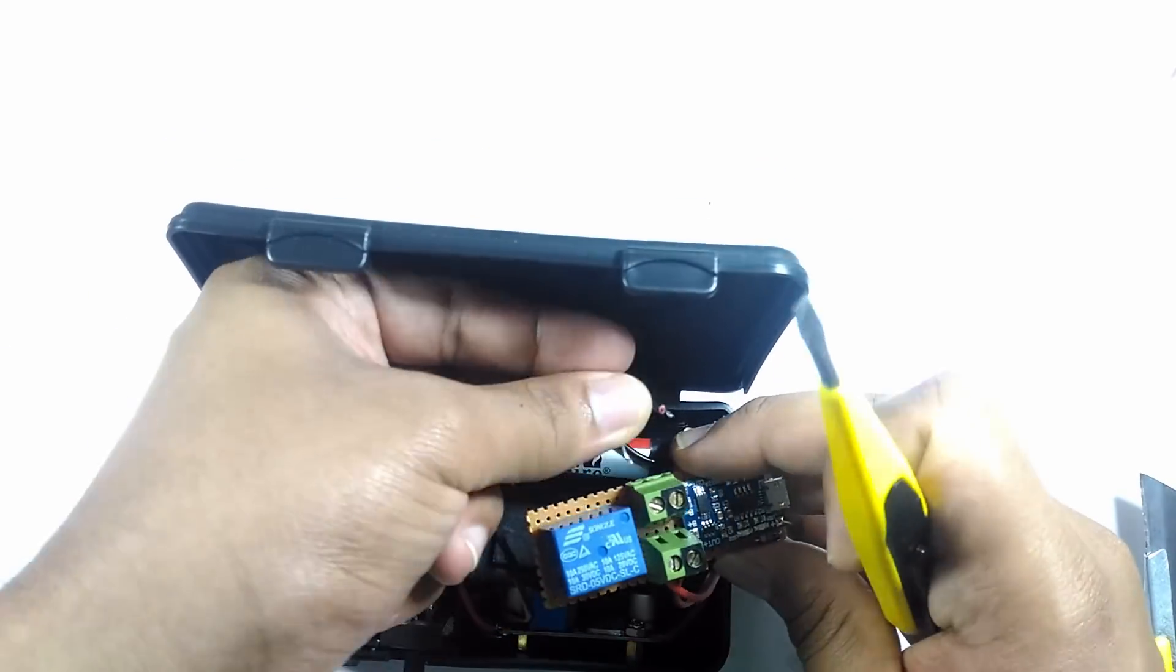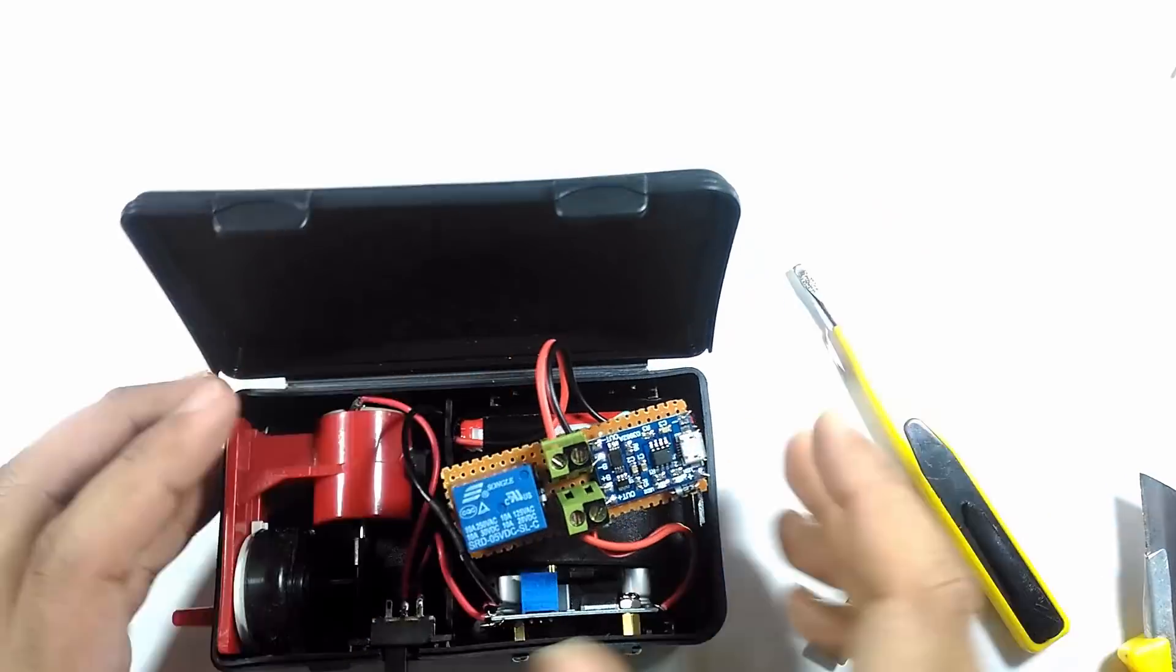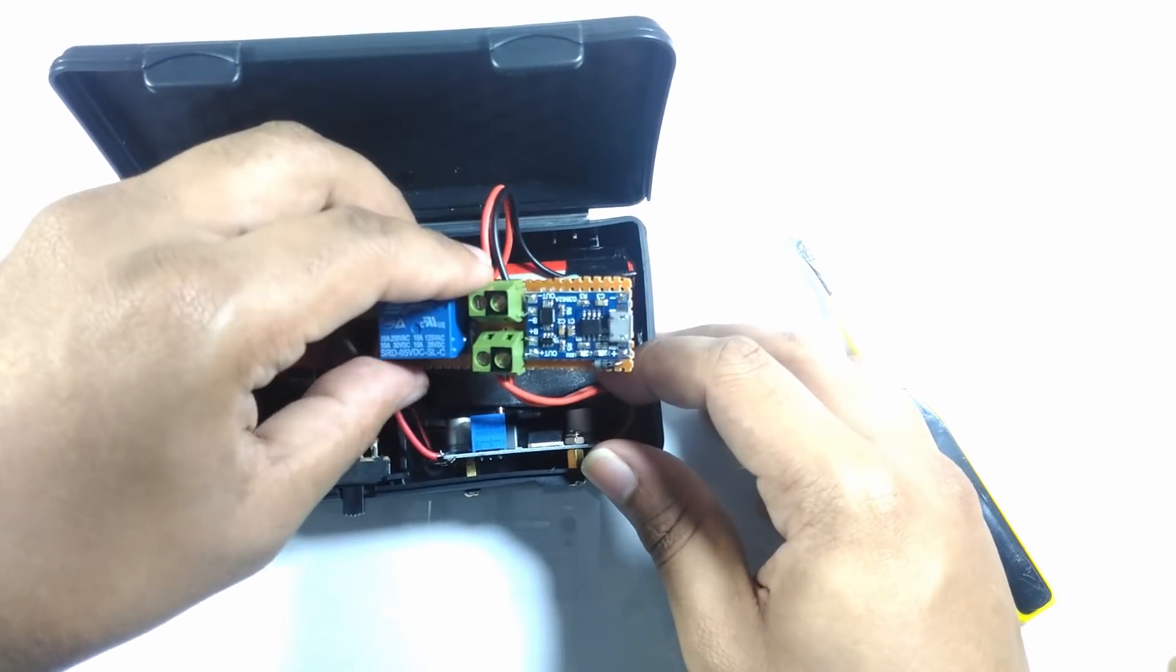I connected the buck converter and the battery to the control circuit and stuck it down to the casing while aligning it to the opening I previously cut to fit a micro USB cable.